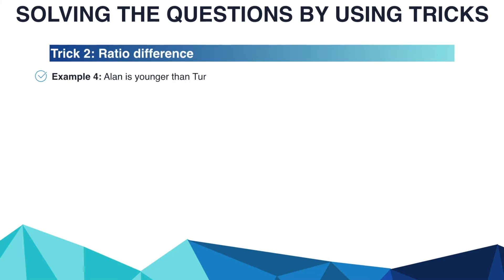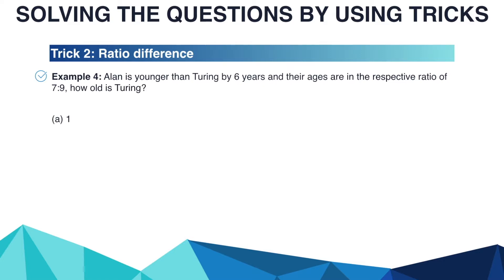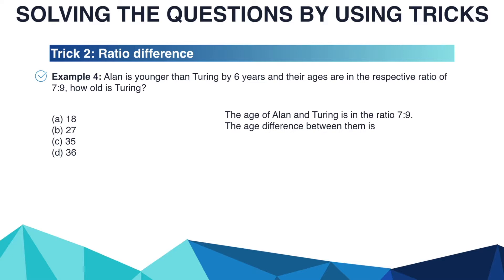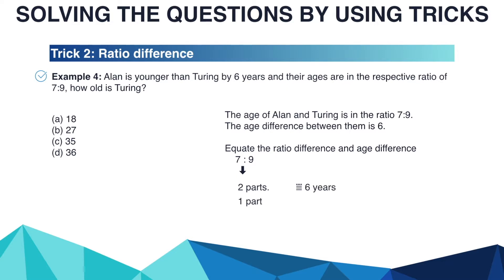Alain is younger than Turning and their ages are in the ratio 7 to 9. Alain is 6 years younger. How old is Turning? Options are A: 18, B: 27, C: 35, D: 36. This type of question is solved by equating the ratio difference and the age difference. The ratio difference between 7 and 9 is 2, and the age difference is 6 years. So 2 parts equals 6 years, meaning 1 part equals 3 years. Thus Turning's age (9 parts) = 9 × 3 = 27 years. The right answer is B: 27.